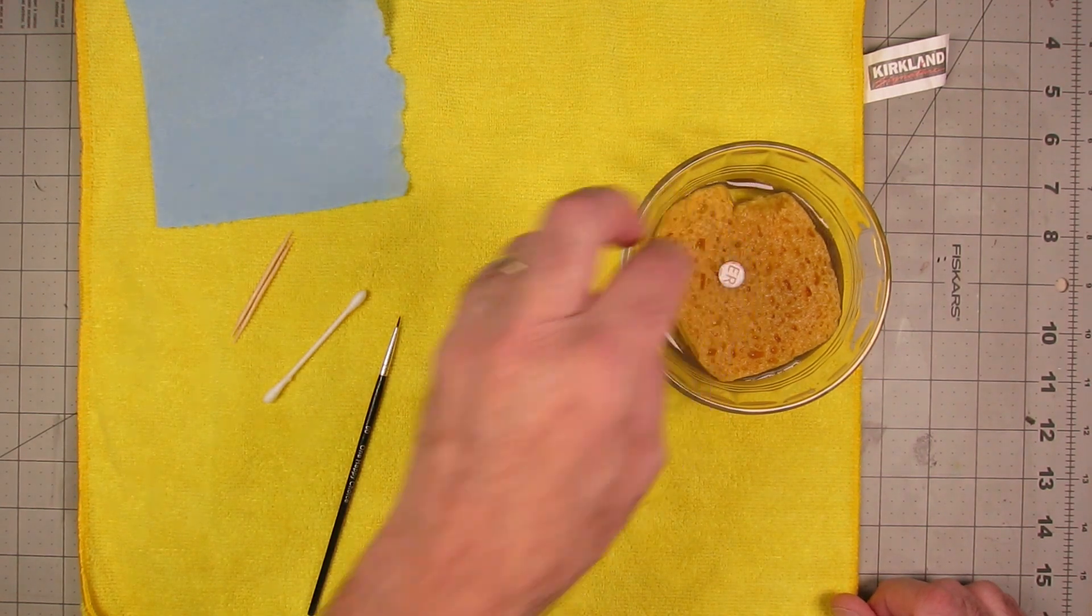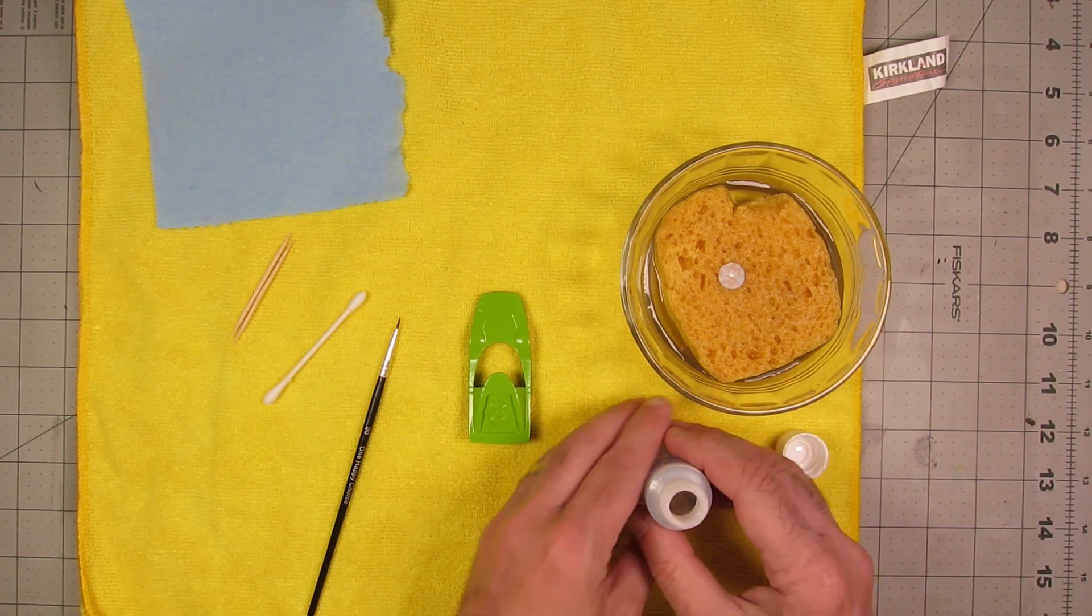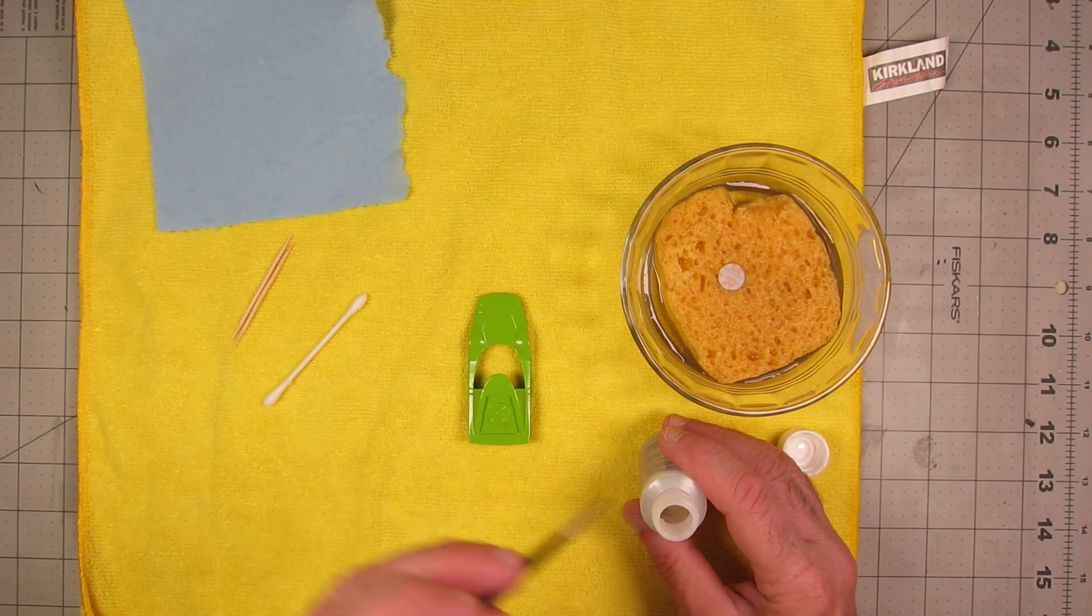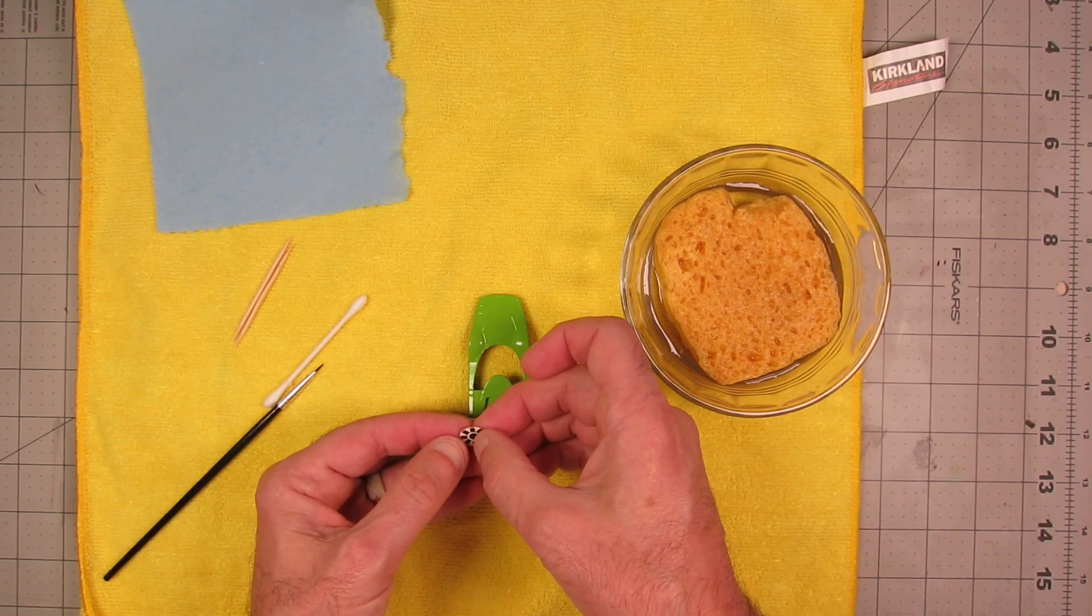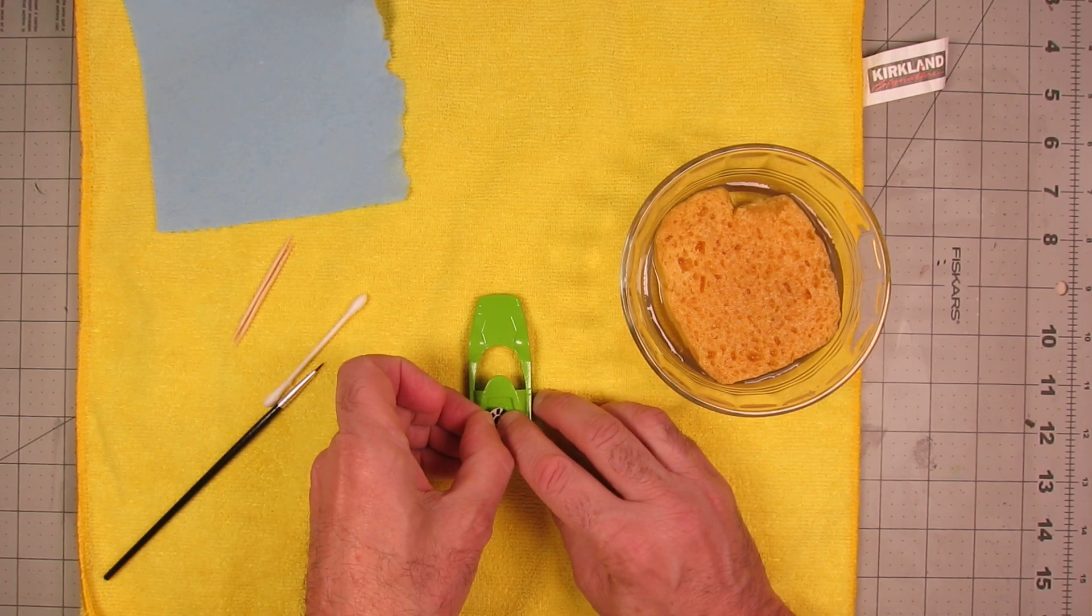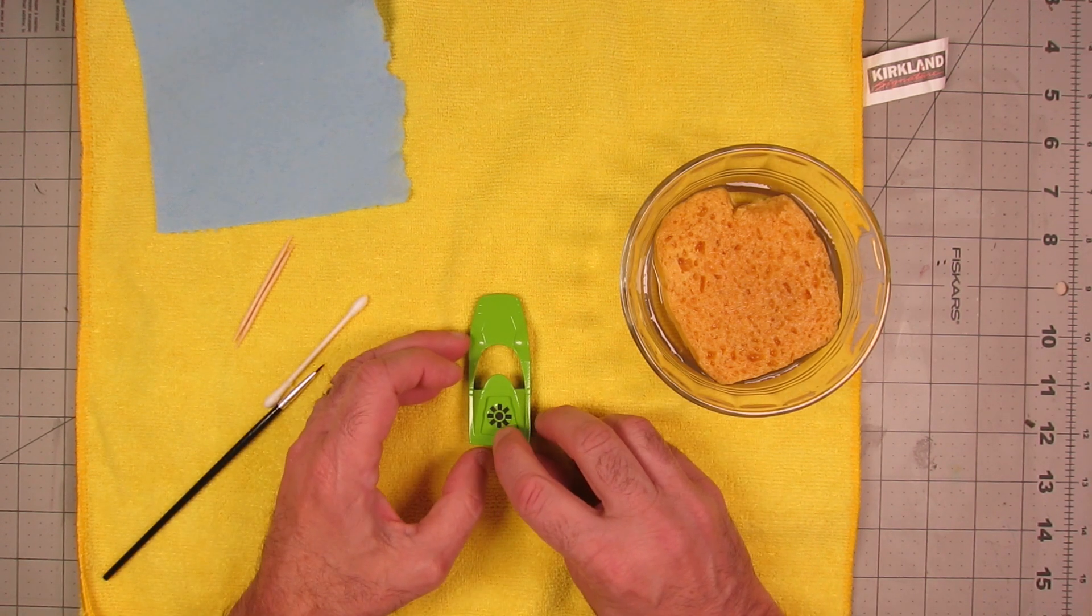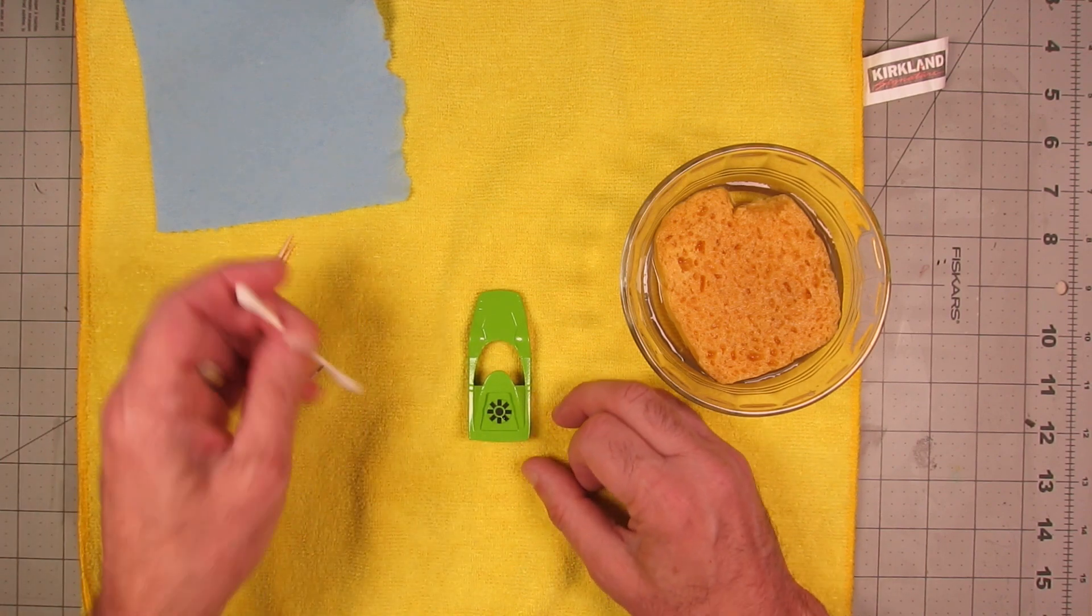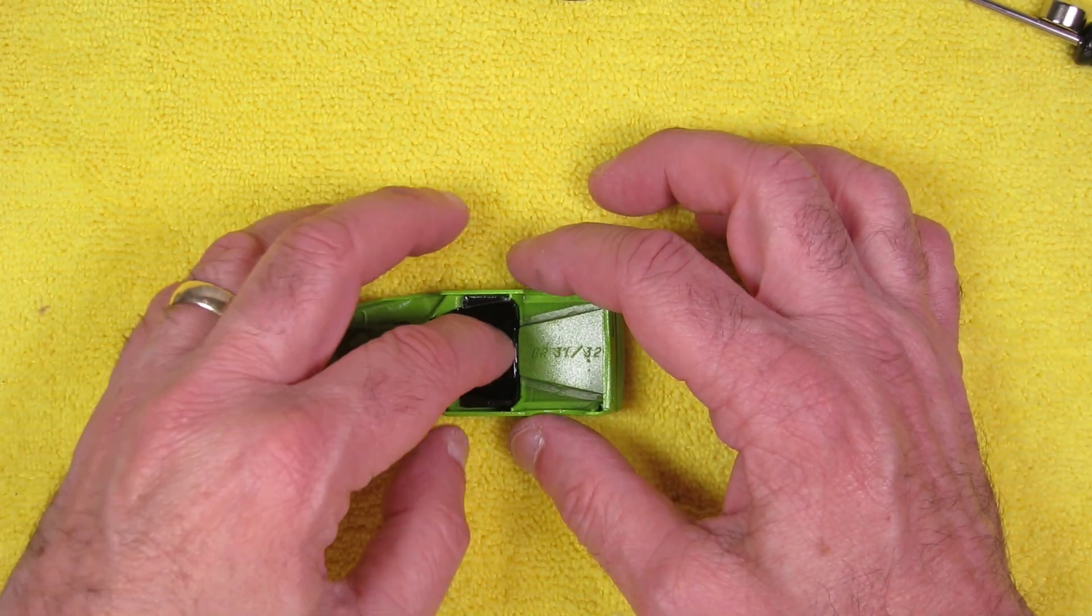I painted it with Model Master Grabber Green. That was the green I had. It was either that or lime ice. I was out of the metal cast green. I didn't have anything else more of a regular green. So this is pretty bold. But at the same time, I kind of like it. It kind of fits this casting, I think, pretty well.